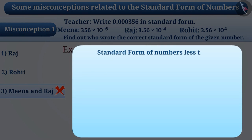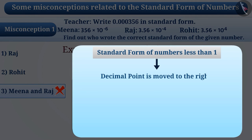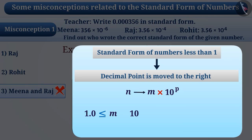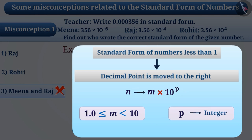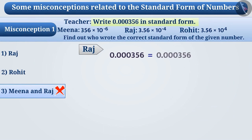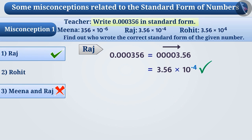Some children know that if the standard form of a number less than 1 is to be obtained, the decimal point is moved to the right so the number can be written as m × 10^p, where m is greater than or equal to 1 and less than 10, and p is an integer. Here, Raj moved the decimal point four places to the right and multiplied by 10⁻⁴ to retain the same value. So the correct answer is option 1.